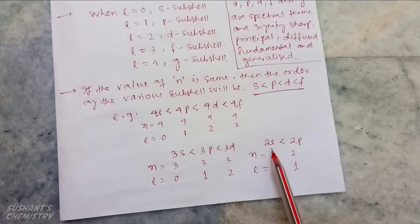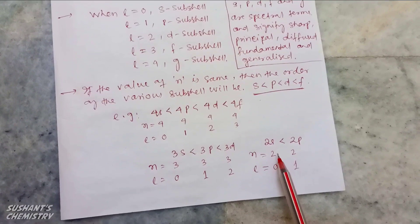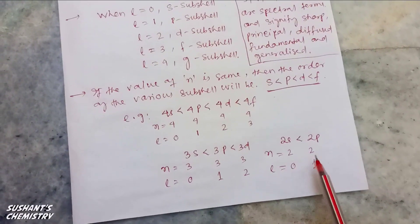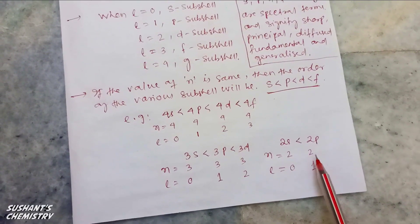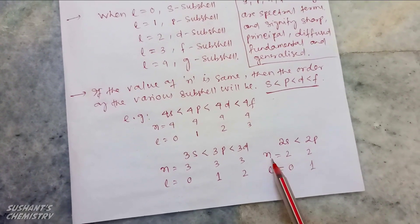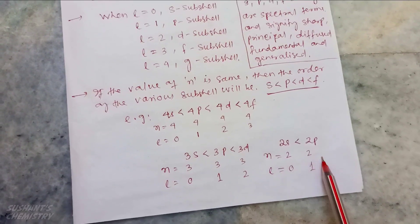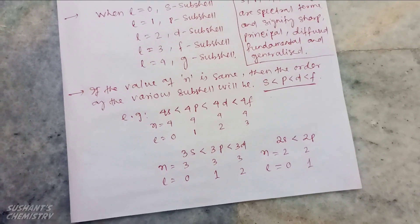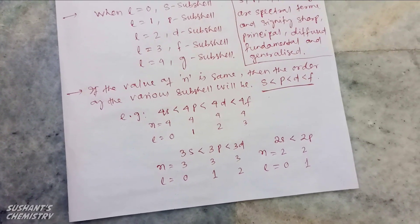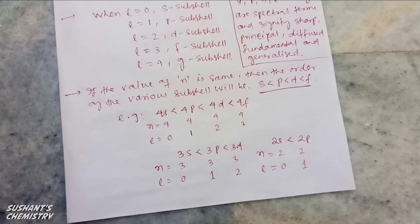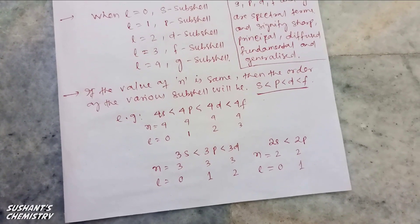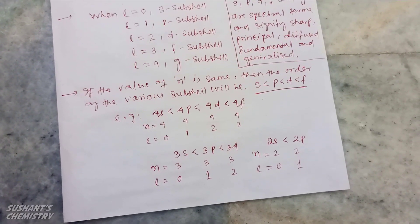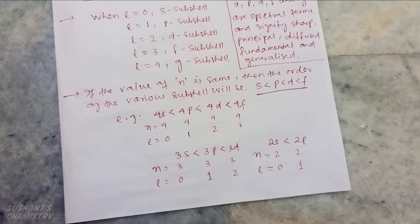Similarly, for 2s and 2p sub-cells, the energy of 2p sub-cells is more than 2s sub-cells. For 2s: n=2, l=0; for 2p: n=2, l=1. The value of n remains constant but the value of l changes, so the energy of 2p sub-cells is more than 2s sub-cells.